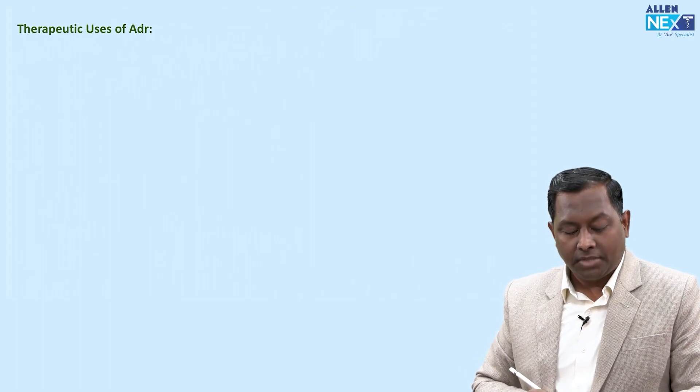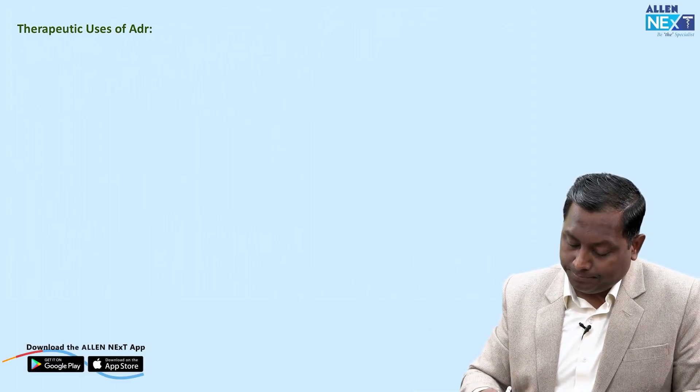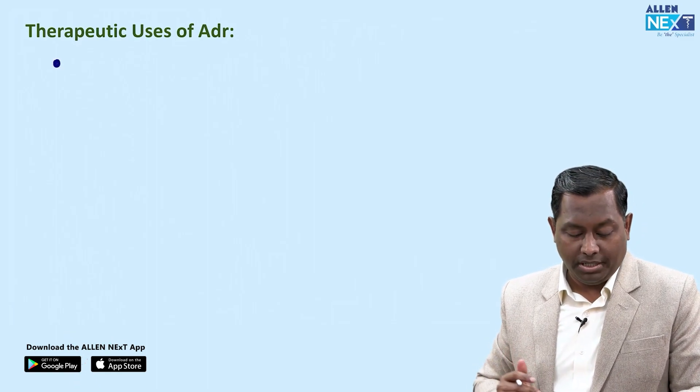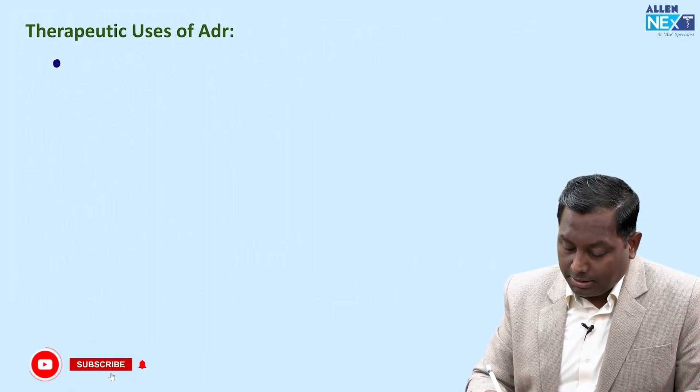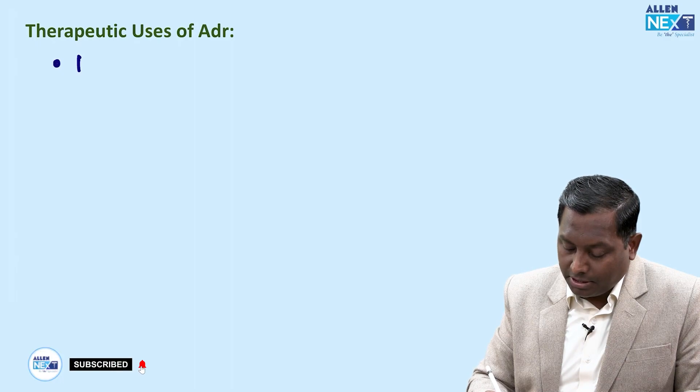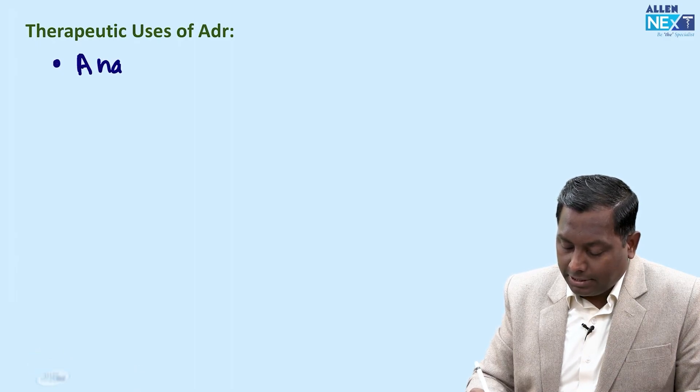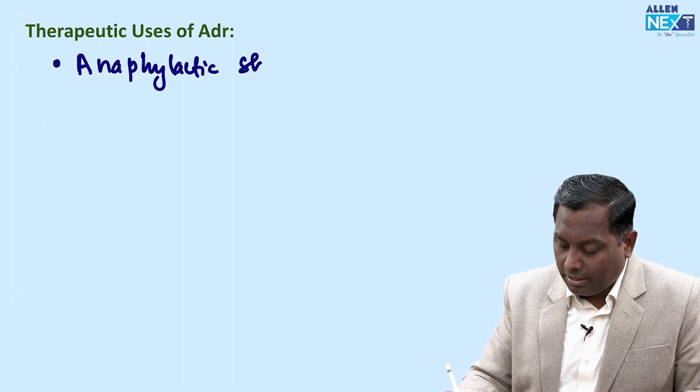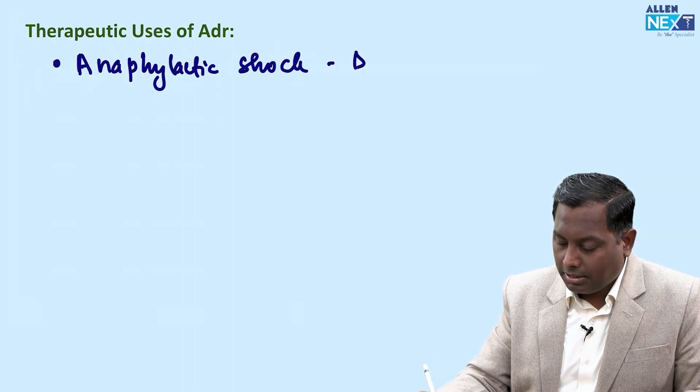Therapeutic uses of epinephrine. In what scenarios can we use epinephrine? Because it is acting on different receptors alpha 1, alpha 2, beta 1, beta 2, it is considered the drug of choice in patients with anaphylactic shock.